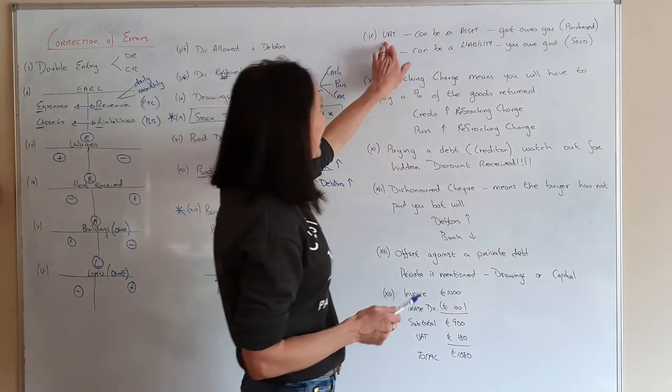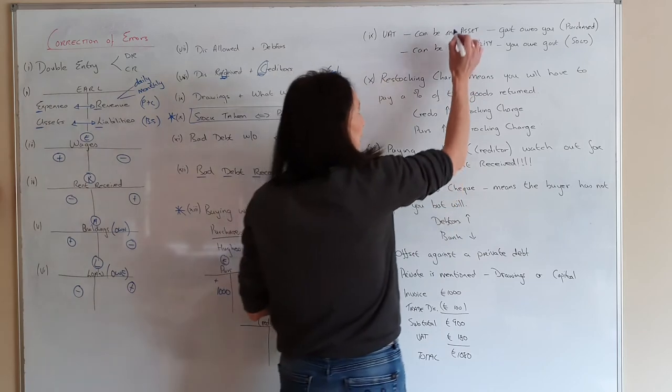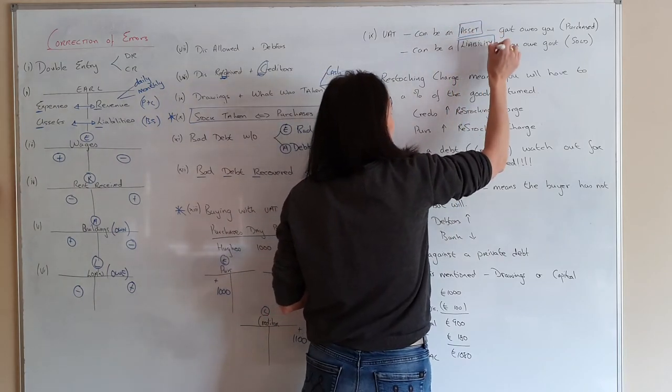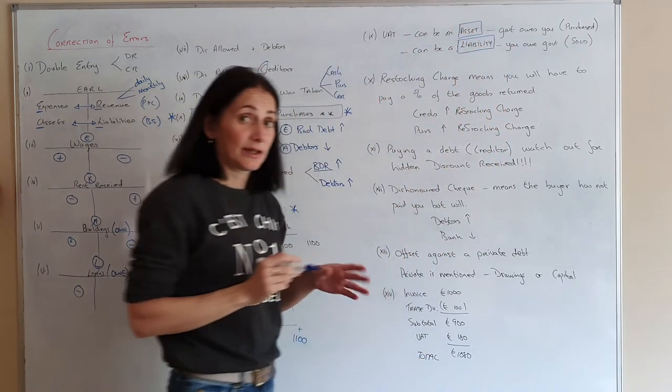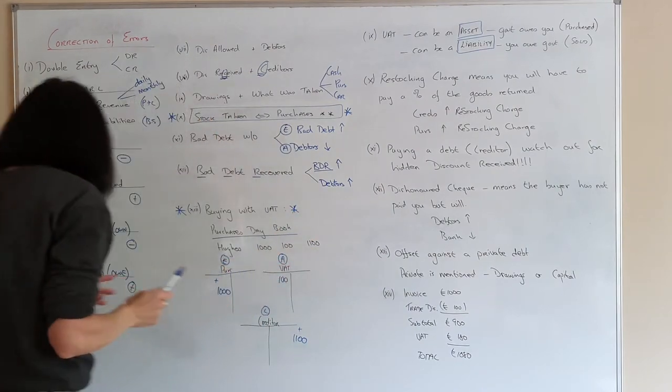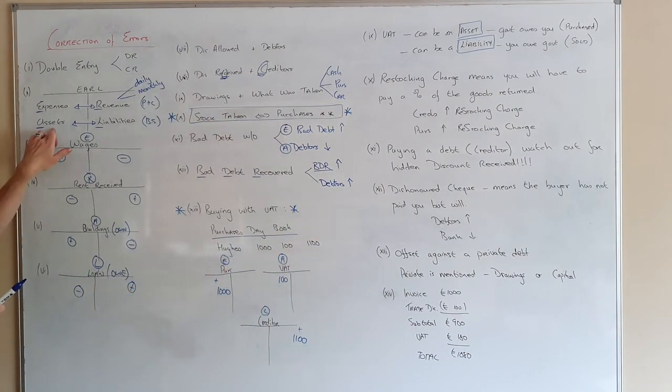Okay. Next one VAT. Now what you need to be careful of is VAT can be an asset or VAT could be a liability. Again, how do you know which it is? Go back over to EARL. An asset if it's on the debit side. A liability if it's on the credit side.